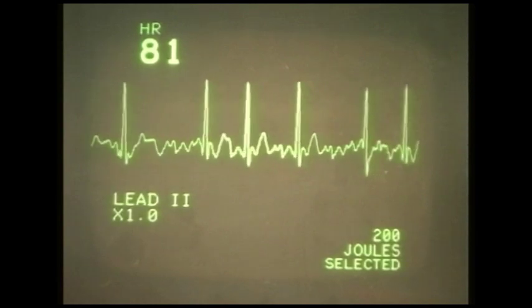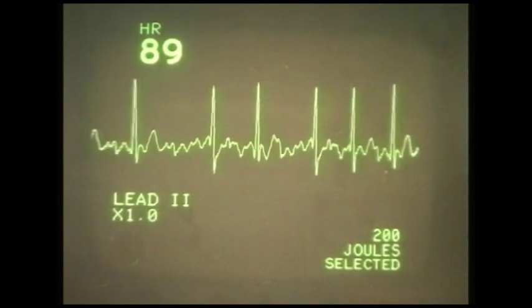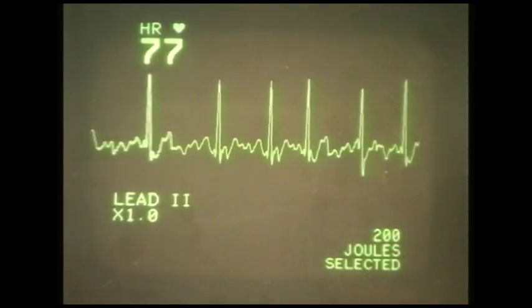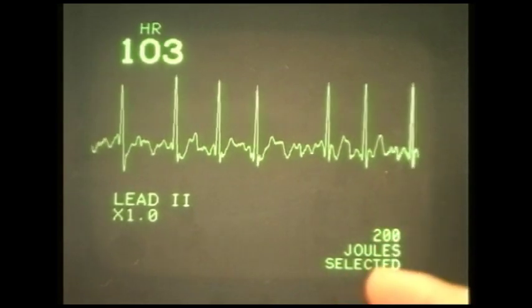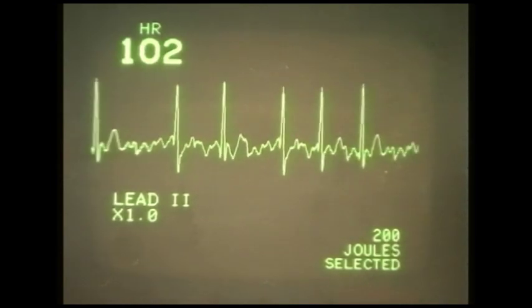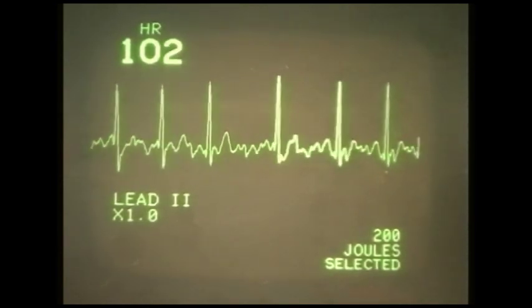It is. And so therefore, again, the AV node can't keep up. And that's why the signals are then irregular. And we see this irregularly irregular heart rate, which is indicative of atrial fibrillation.